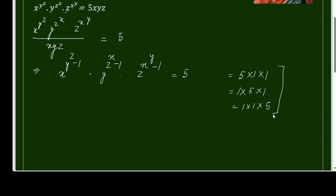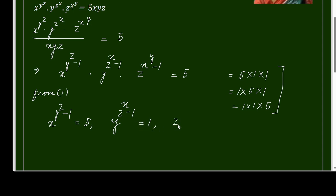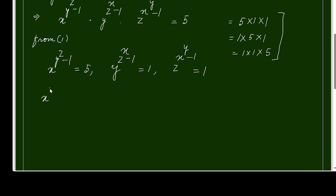Taking the first option: comparing the product with these factors, x^(y^z − 1) = 5, y^(z^x − 1) = 1, and z^(x^y − 1) = 1. Since 5 is a prime number, x^(y^z − 1) = 5 = 5^1. It cannot be written in any other integer form since x, y, z are integers. So this implies x = 5.